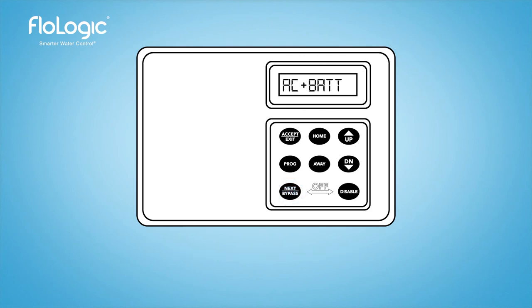The power mode is set at AC plus battery, which is the recommended setting for most users, unless you are using solar energy or removing the backup battery. Press the accept exit button to exit the settings mode.